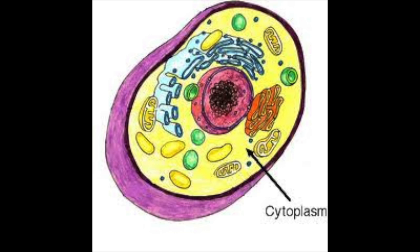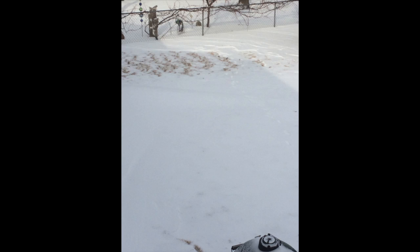Cytoplasm is a gel-like mixture inside of the cell containing a hereditary material. Cytoplasm is the location of most cell-like processes. We are comparing it to the ground because the ground holds everything into place like the cytoplasm does to the organelles in the cell.